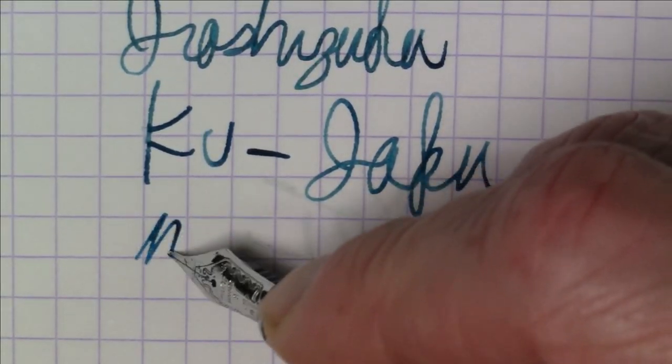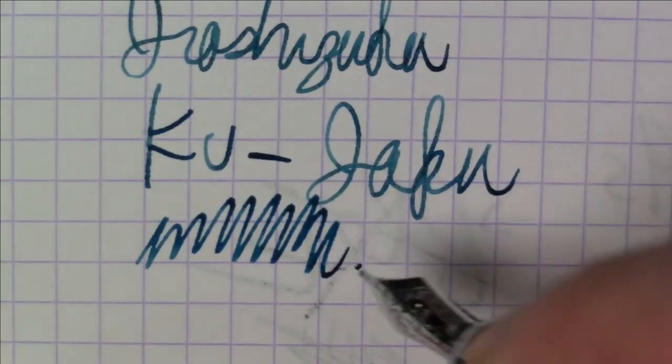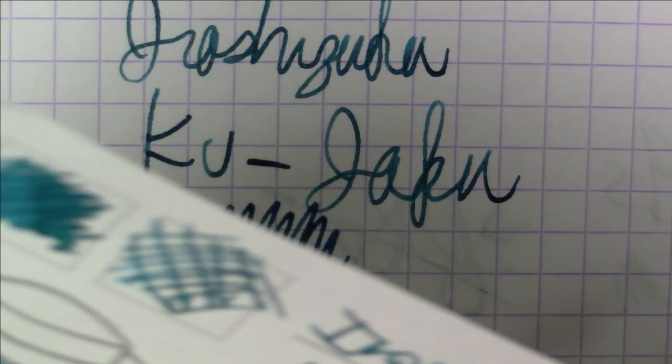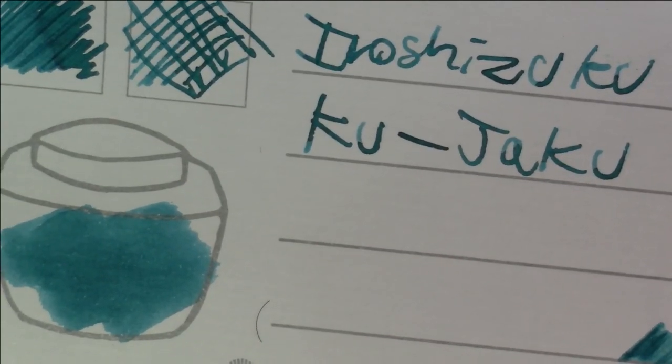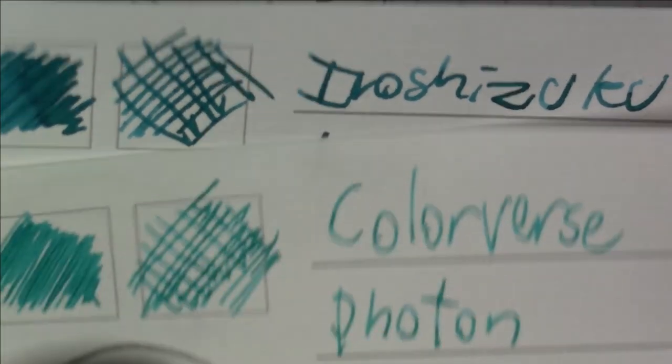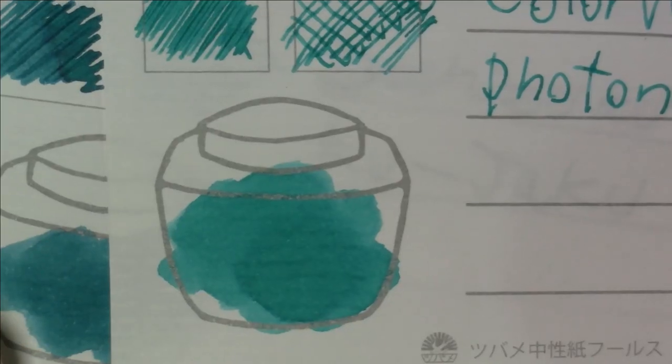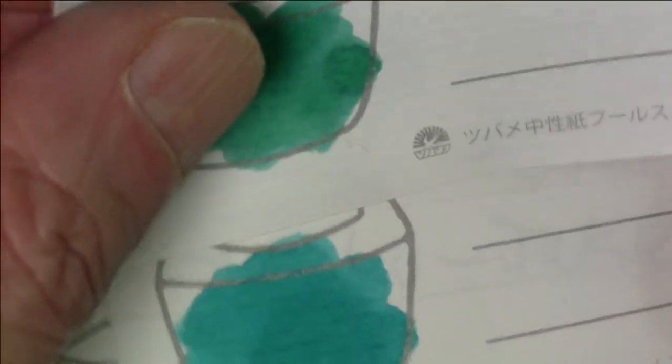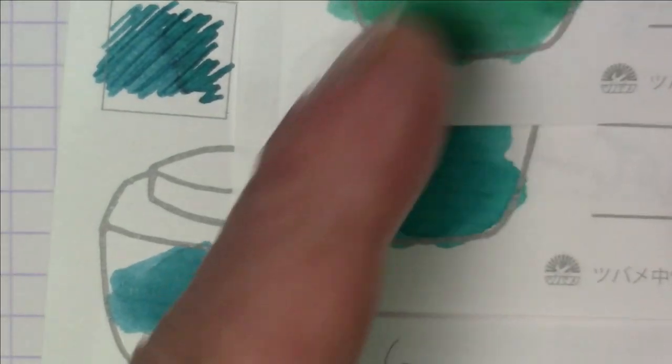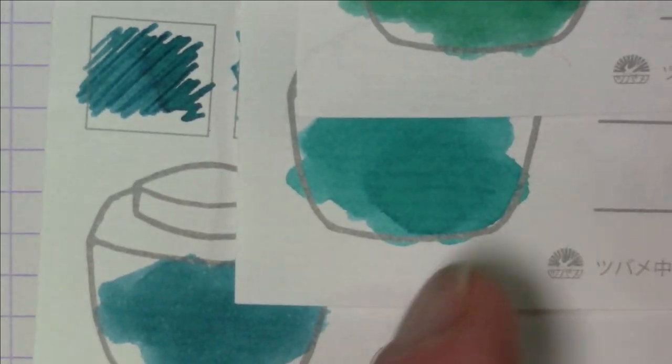And this is sort of like a, almost like a minty, bluish green. Here it is on the card. And here it is compared to something like Colorverse Photon, which is really a very minty color. And here it is compared to just like a just a true green, which is a Twsbi Emerald Green, just to give you a difference between this pen and Twsbi Emerald Green.